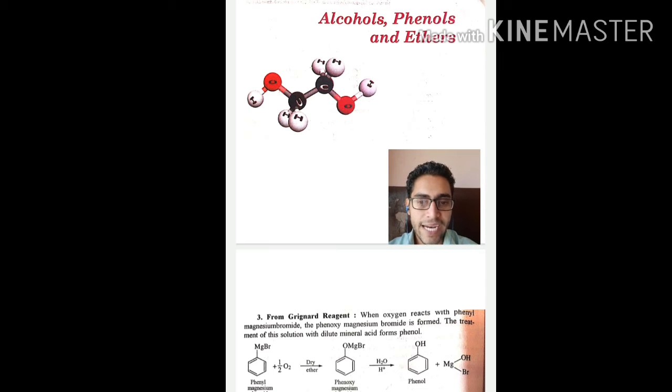When oxygen reacts with phenyl magnesium bromide, which we call Grignard reagent, in the presence of oxygen, phenyl magnesium bromide is converted to phenoxymagnesium bromide. And the treatment of this solution with dilute mineral acid...